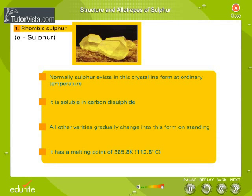Rhombic or alpha-sulphur is the form in which sulphur normally exists at ordinary temperature. It is soluble in carbon disulfide, and all other varieties gradually change into this form on standing. It has a melting point of 385.8 Kelvin or 112.8 degrees Celsius.